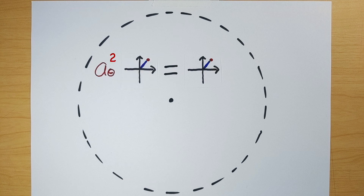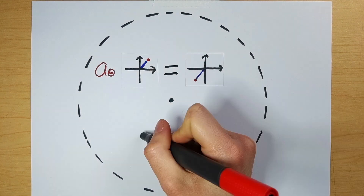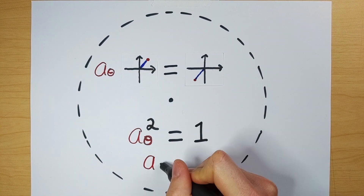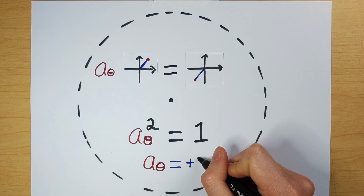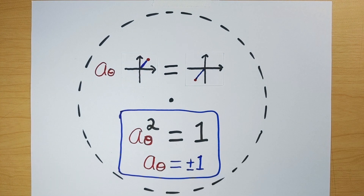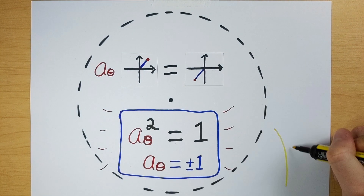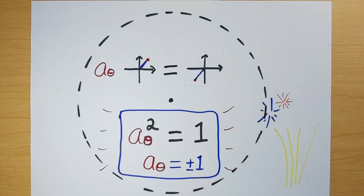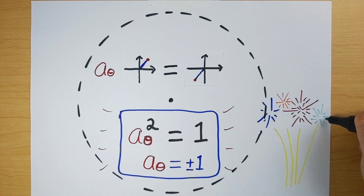So if going around the space once results in a rotated wave function, going around the space again rotates that number back to its original value. Whatever rotation gets picked up after a single exchange, that number needs to square to one. There are only two square roots of one, so we get two possibilities: plus or minus one — two types of particles, bosons and fermions.